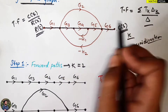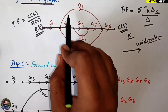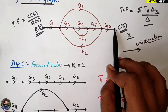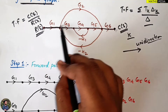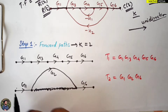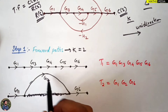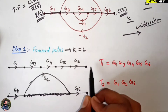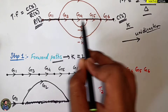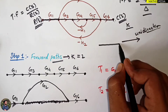The second forward path starts from the input and takes a different direction — still going left to right — reaching the final output point. Observe that all arrows are in the same direction. Why can't we take certain other paths? If you go in one direction and try to loop back, you would need to travel through certain nodes and paths again.